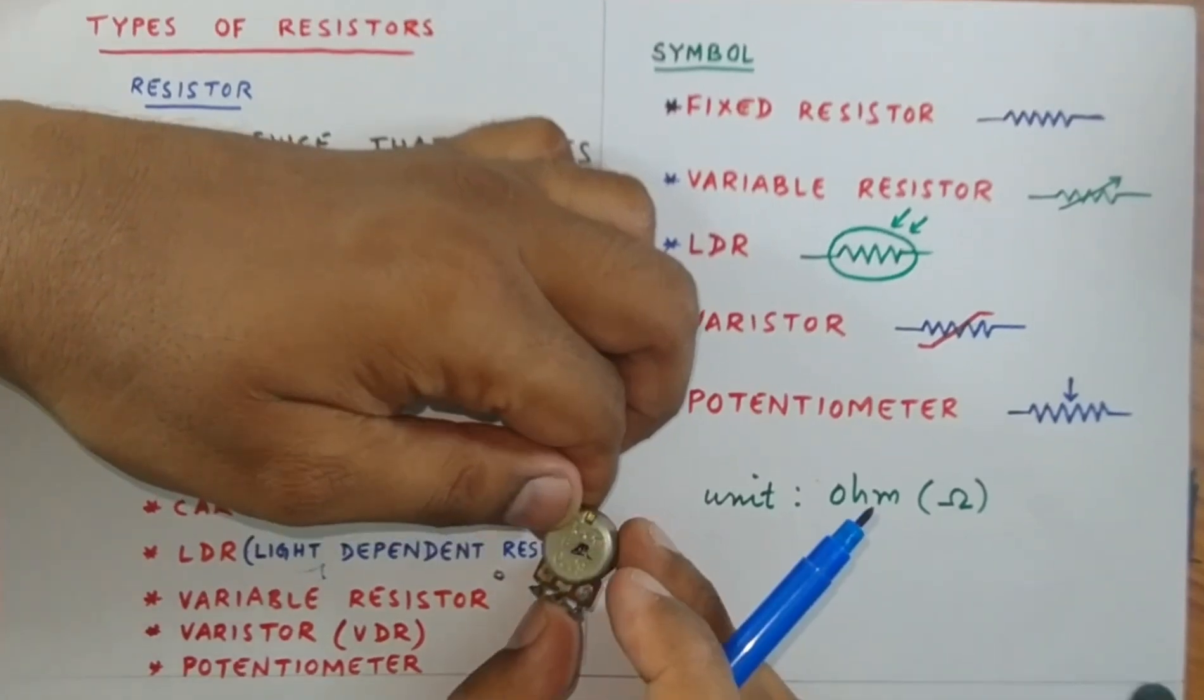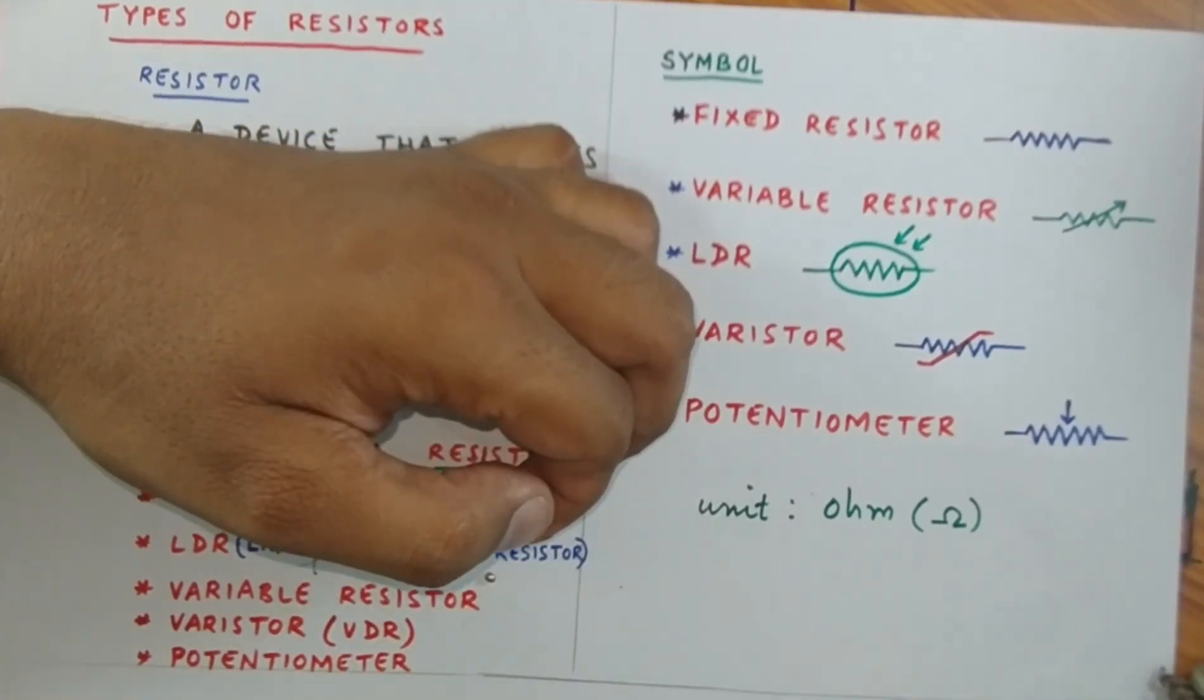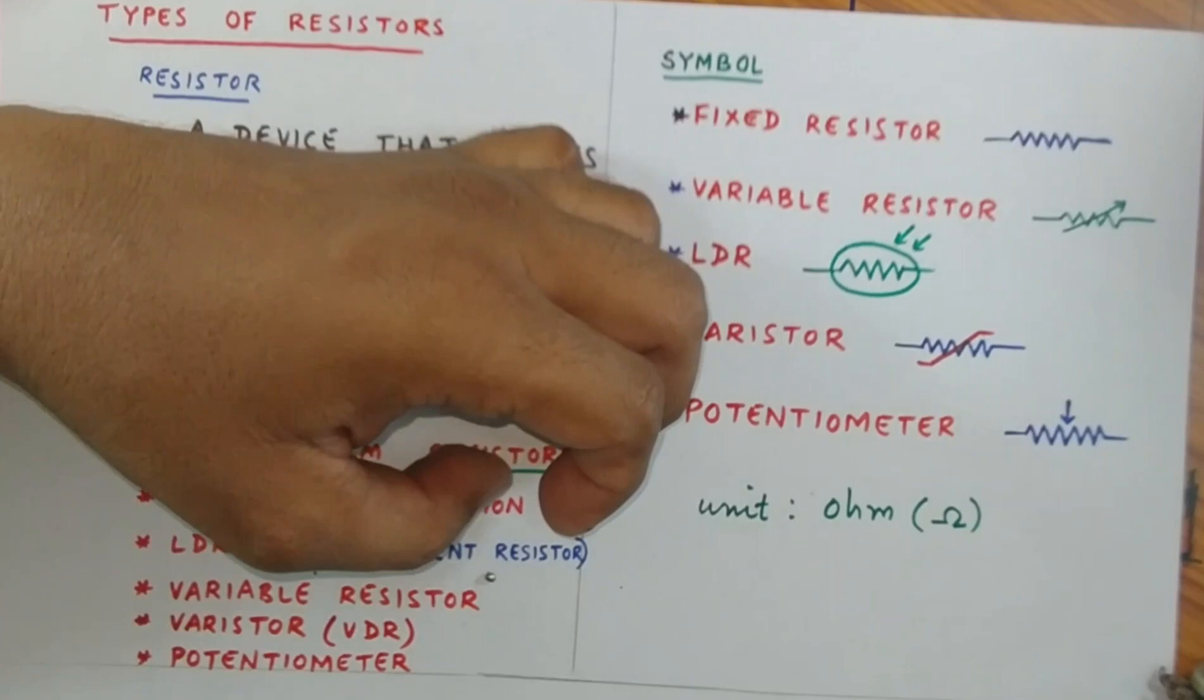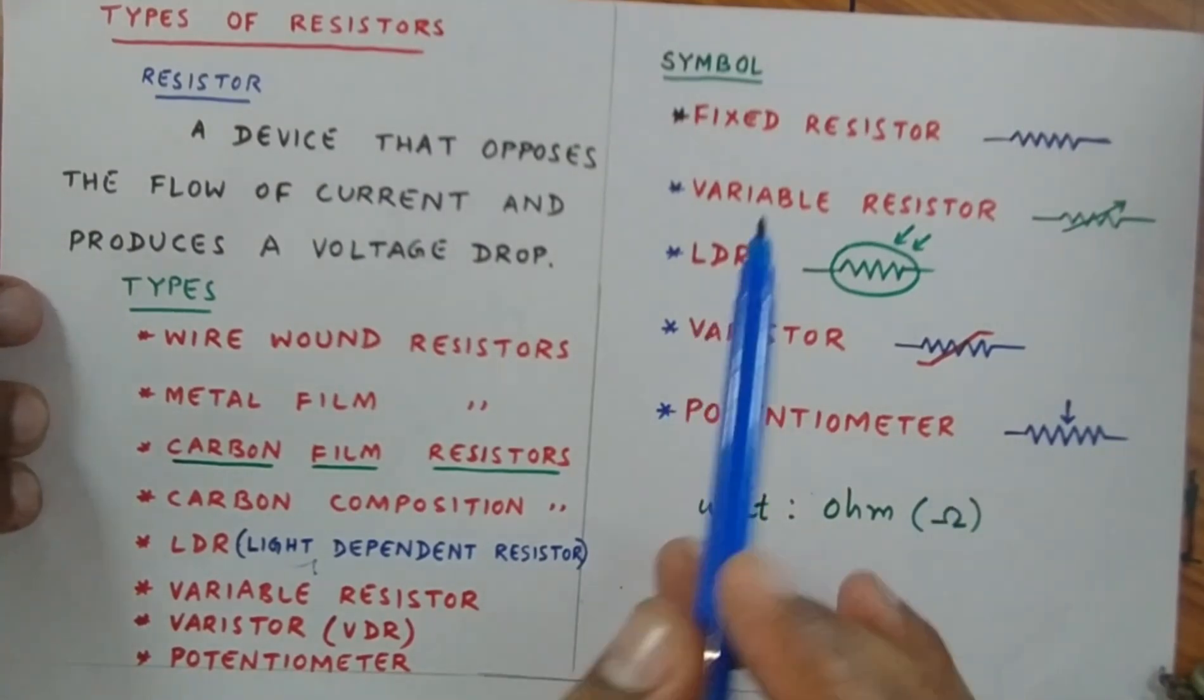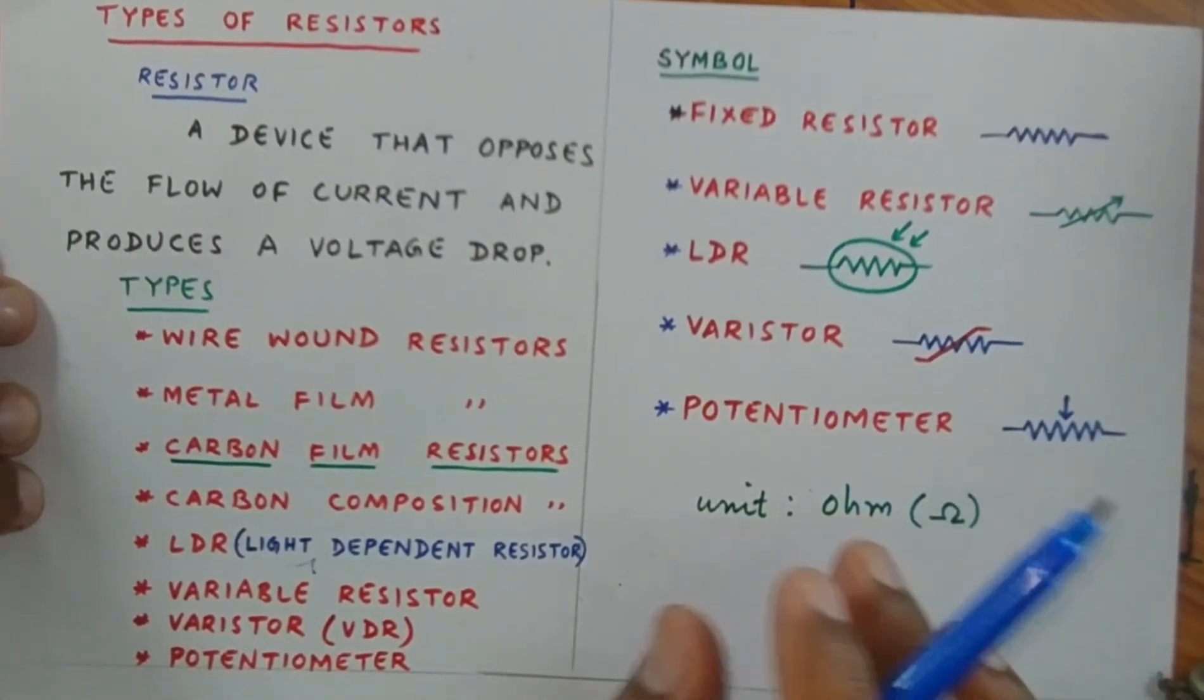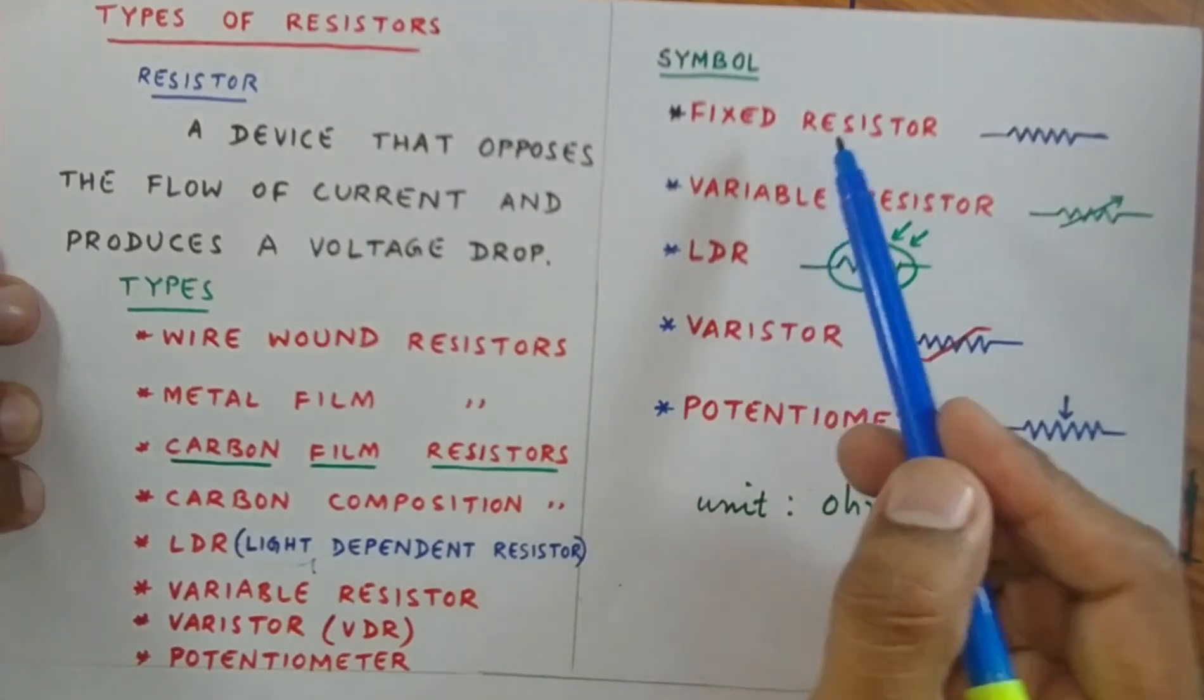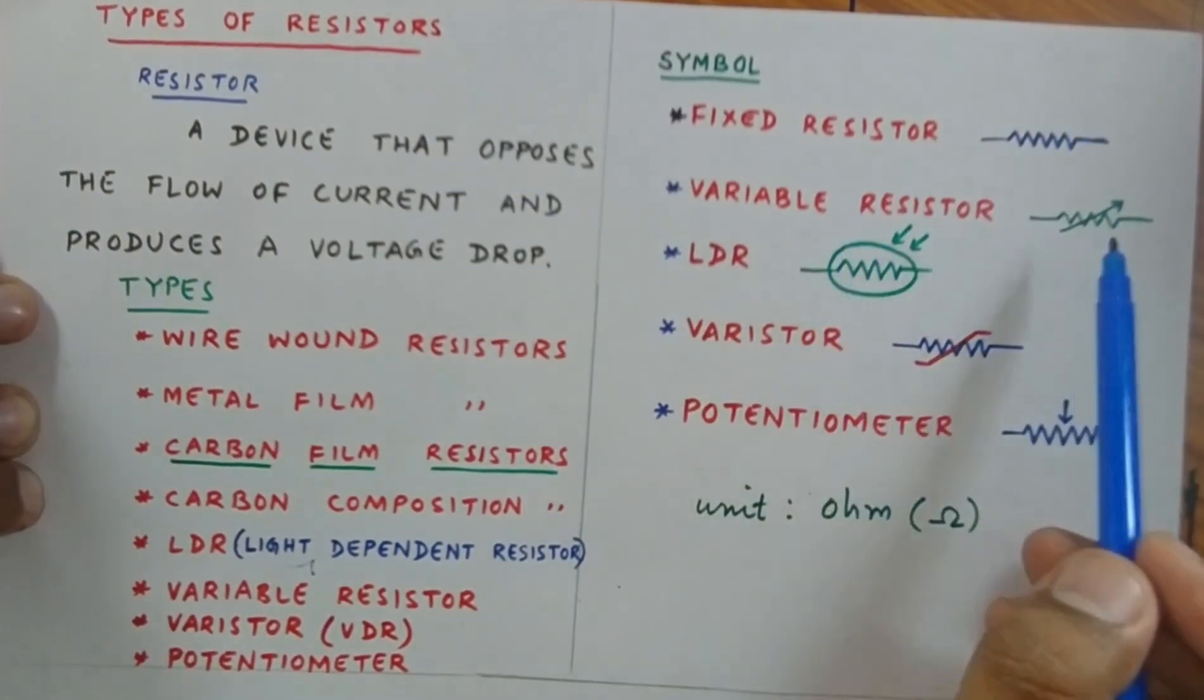This is all about some of the fixed and variable resistors. Now, how do we represent them with symbols? All these resistors have different symbols. For fixed resistors, we use this symbol. For variable resistors, we use this symbol.